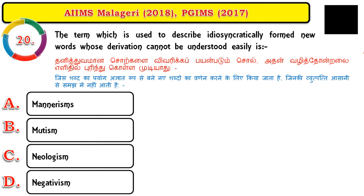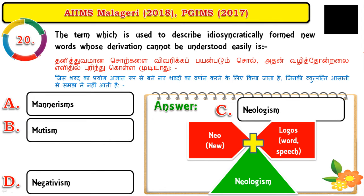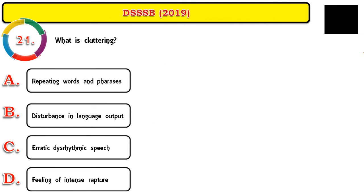Question number twenty: the term used to describe idiosyncratically formed new words whose derivation cannot be understood easily is neologism. From Greek: 'neo' means new and 'logos' means word or speech — so neologism means forming new words or speech. The person creates a peculiar new word by themselves; others cannot understand its meaning, but the client will give a special description for it. The word will not be grammatically found in any language.